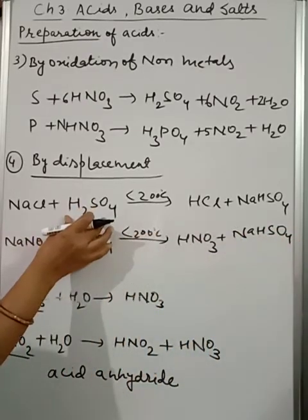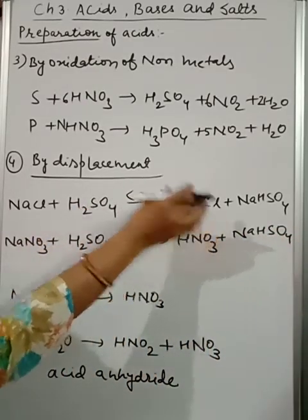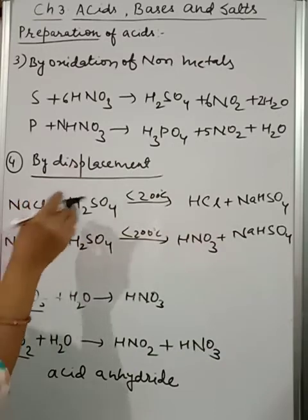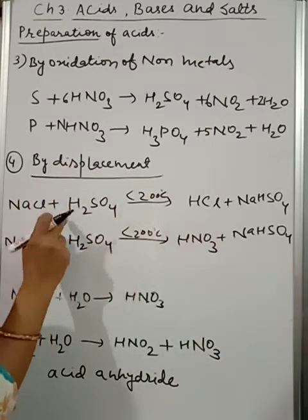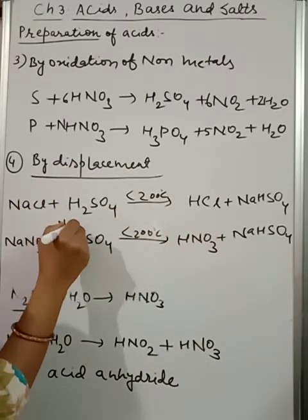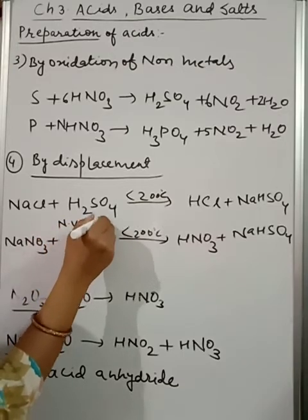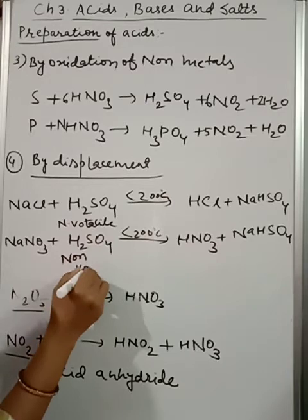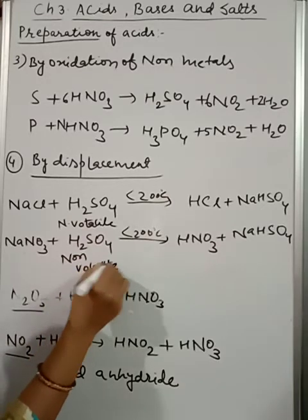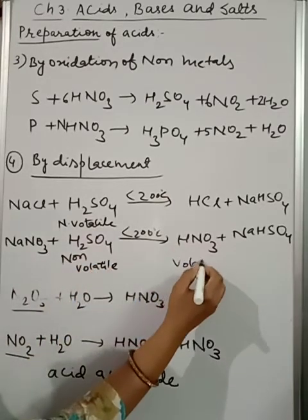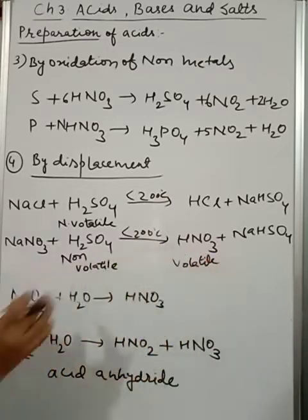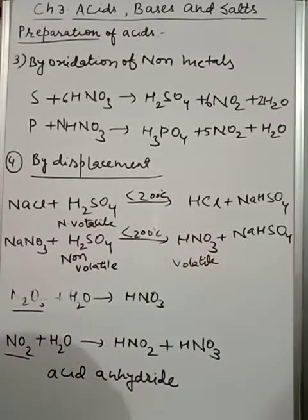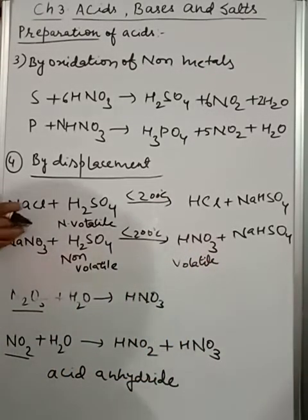Now you can see here I have taken one acid and I am getting another acid, so by displacement process it is known as displacement. Here it is non-volatile acid. What are you getting? Volatile, you're getting volatile.